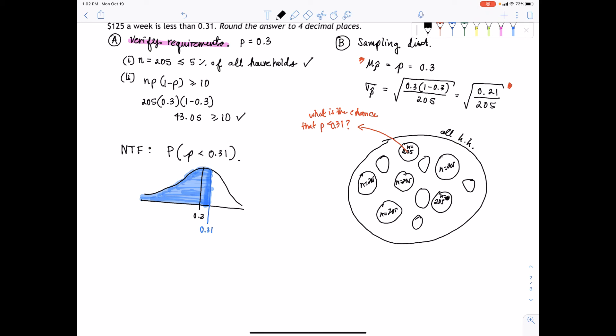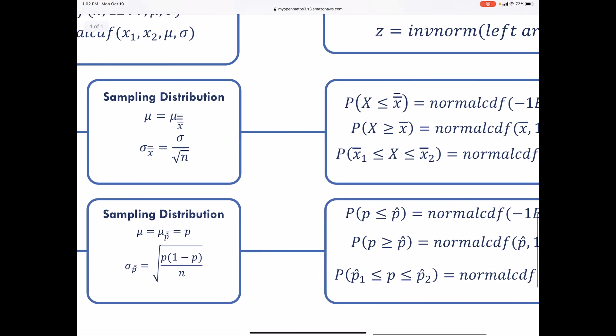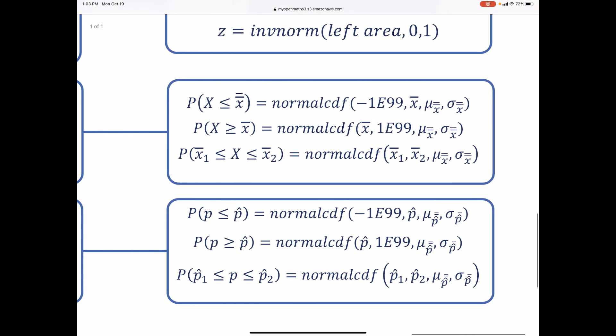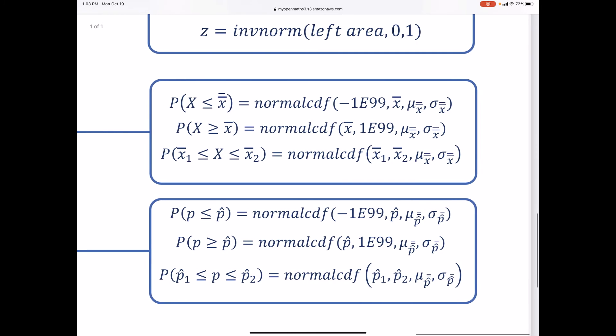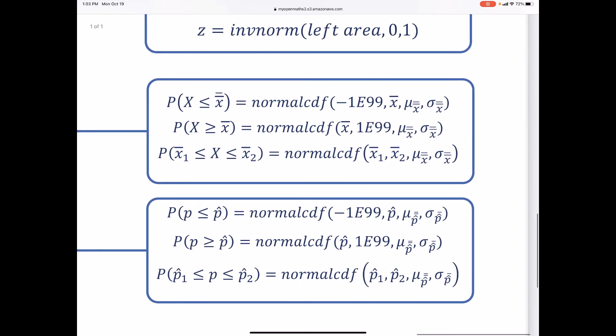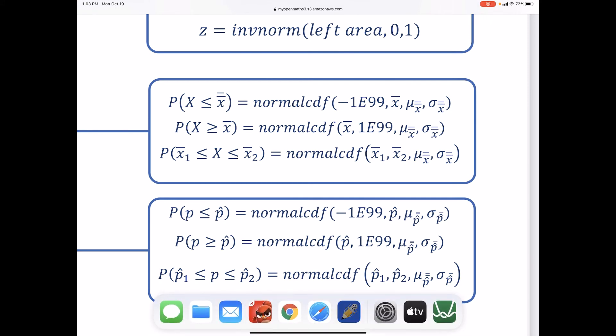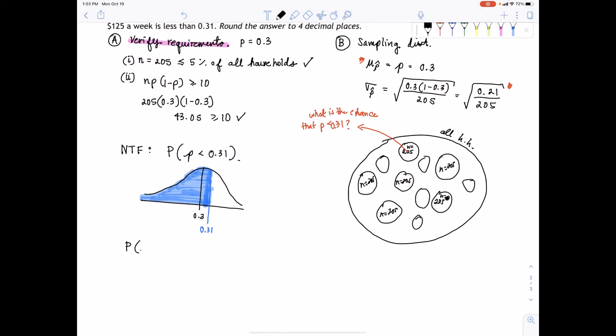In order to do this, we can go back to the flow chart. Once we identified the sampling distribution, now let's identify our scenario. We're going to have less than, so we're going to have negative 1E99 to P hat. With the normalCDF, the probability of P less than 0.31 would equal normalCDF of negative 1E99, 0.31 - so left bound, upper bound - and then the mean is 0.3, and the standard deviation is square root of 0.21 over the sample size 205.